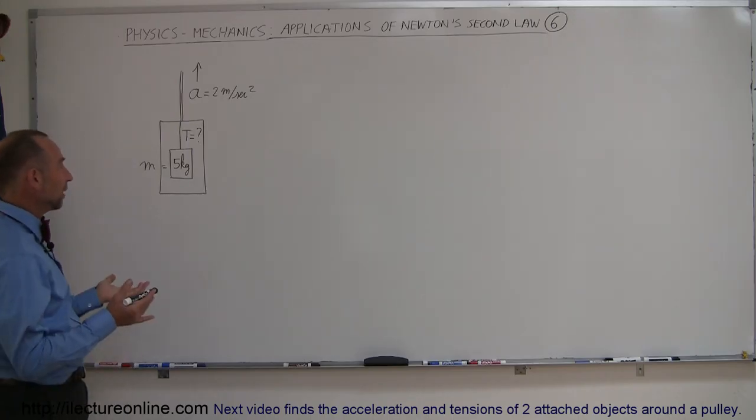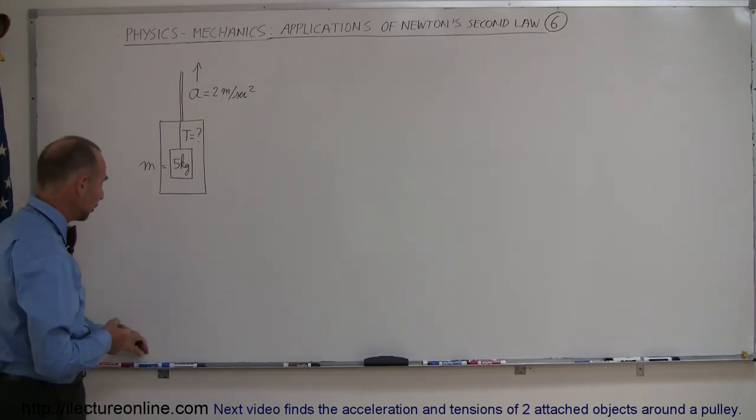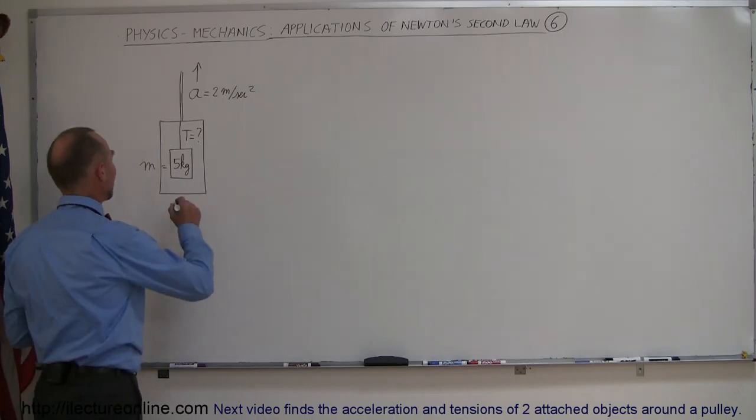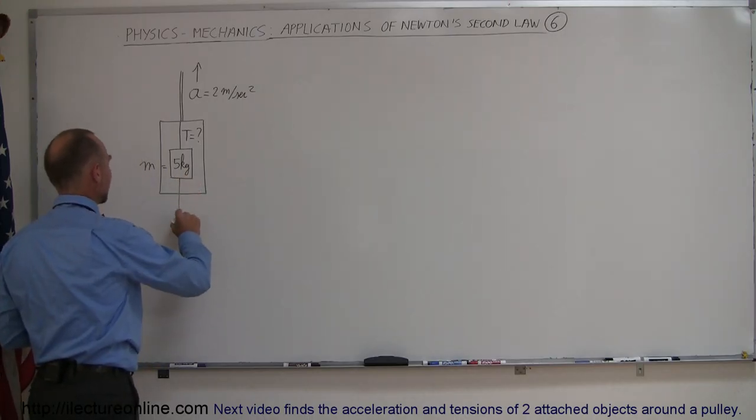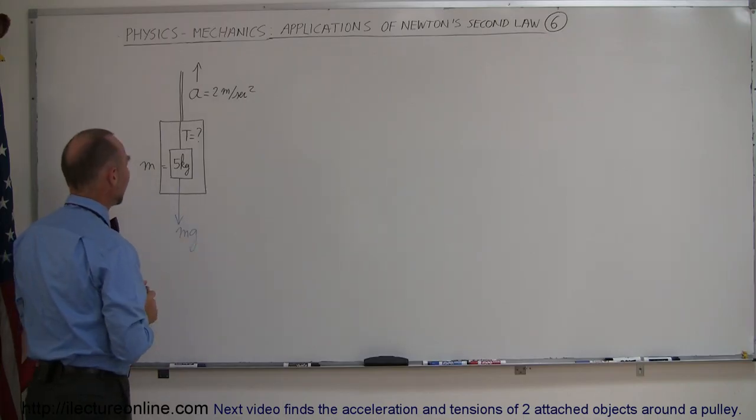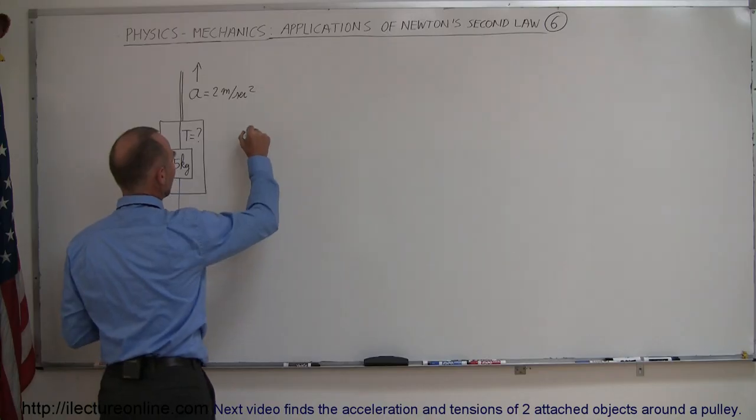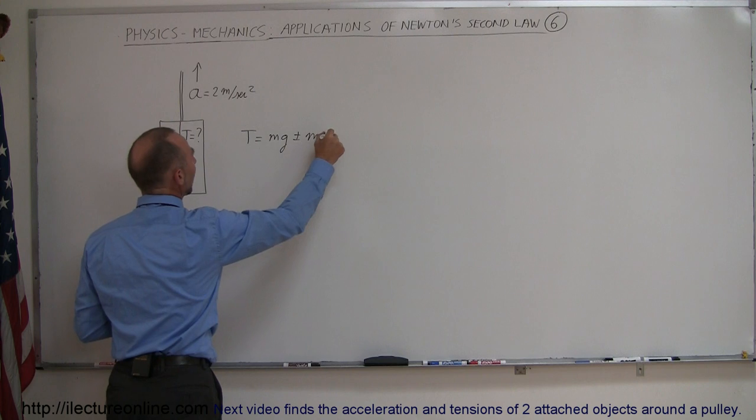And the easy way to look at it is, let's see what all the forces are acting on this. We have, of course, the weight, which is mg, pulling down, and the tension in the string. As we mentioned before, the tension is always going to be equal to mg plus or minus ma.